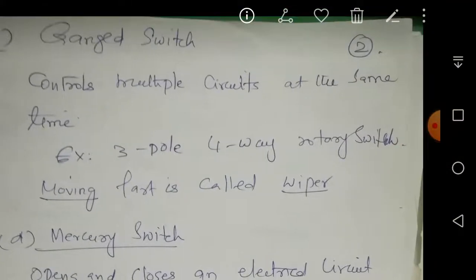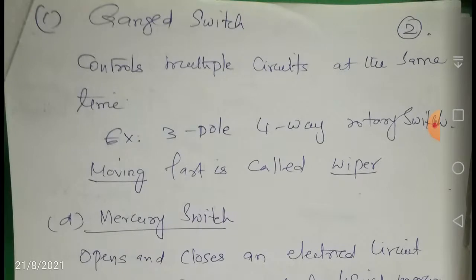Next is the ganged switch, which controls multiple circuits at the same time. An example is a three-pole four-way rotary switch — it has three poles and can work in four ways. This switch has a moving part called a wiper. The function of a ganged switch is to control more than one circuit simultaneously.